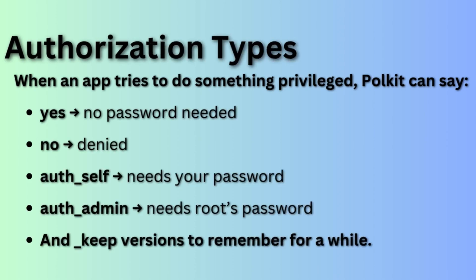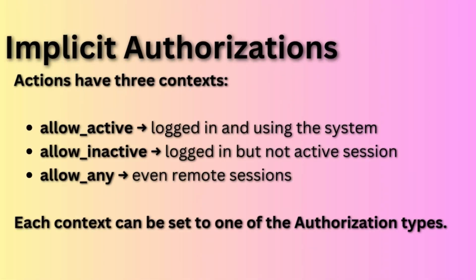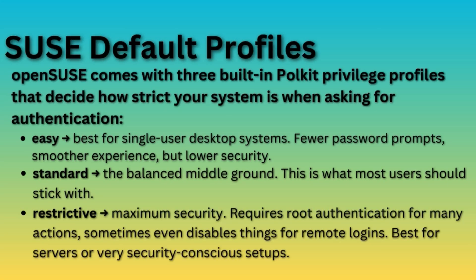Authorization types: when an app tries to do something privileged, polkit can say: yes — no password needed; no — denied; auth_self — needs your password; auth_admin — needs root's password. The underscore keep versions remember the decision for a while. Implicit authorizations: actions have three contexts — allow_active (logged in and using the system), allow_inactive (logged in but not active session), allow_any (even remote sessions). Each context can be set to one of the authorization types.